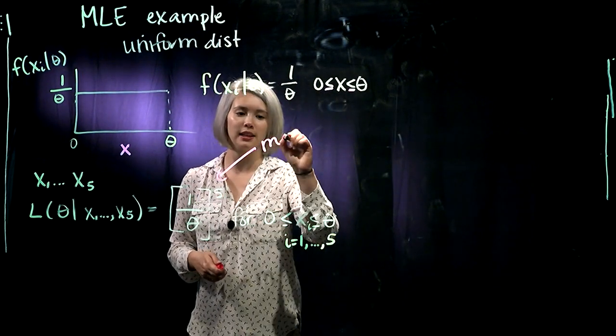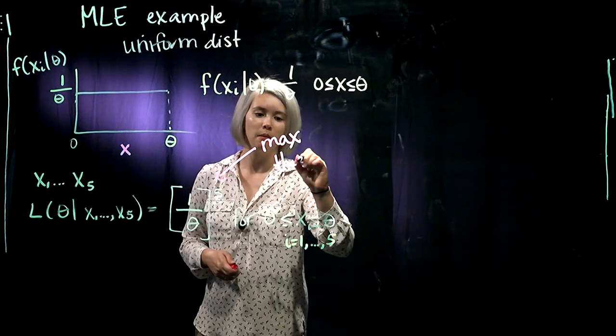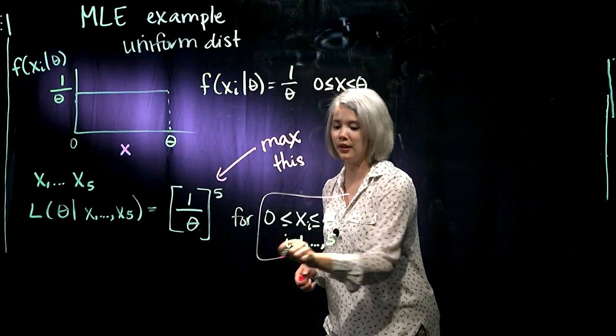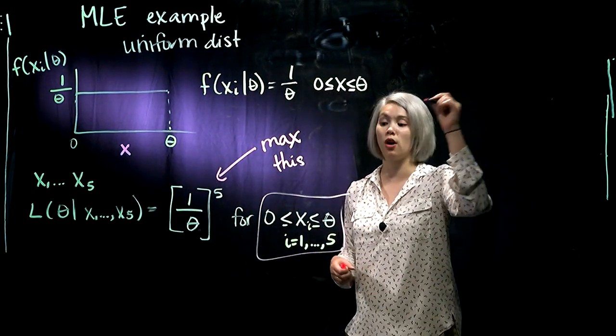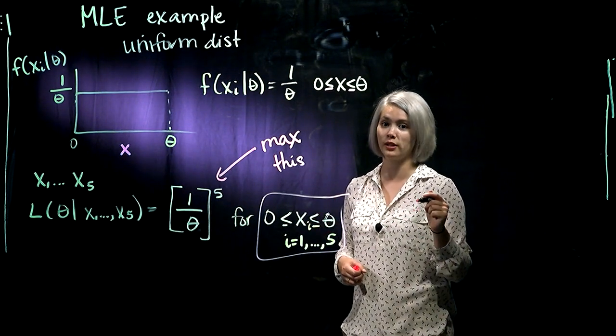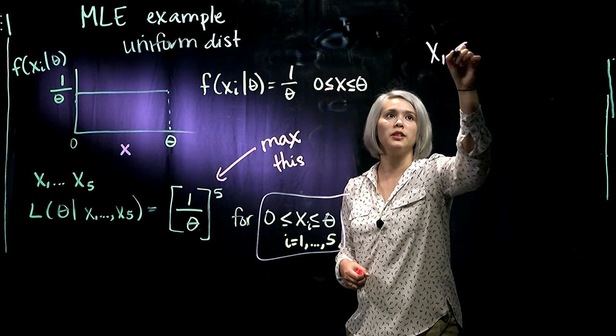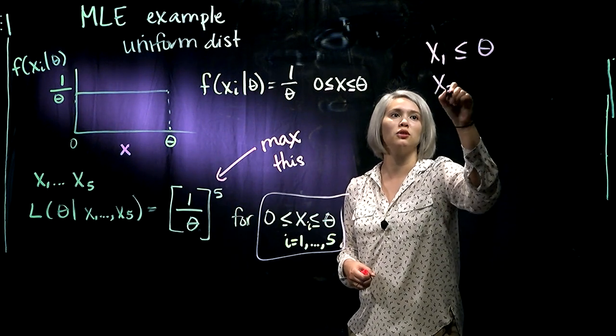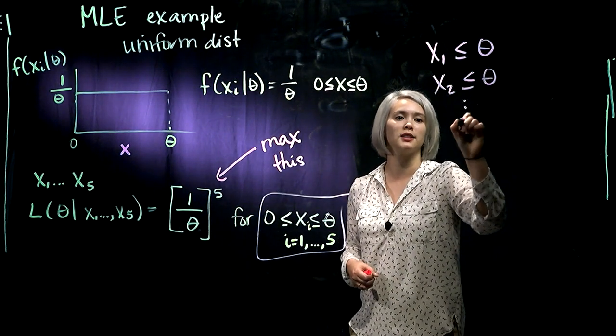So we're trying to maximize this. But remember, we also have this constraint here. We need to have all of the x's be less than or equal to theta. So we need x1 less than or equal to theta, x2 less than or equal to theta, and so on, all of them.